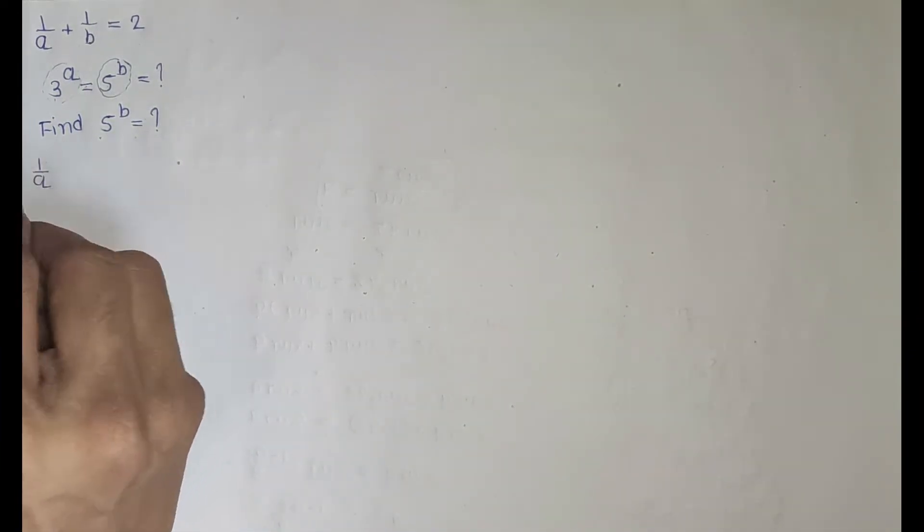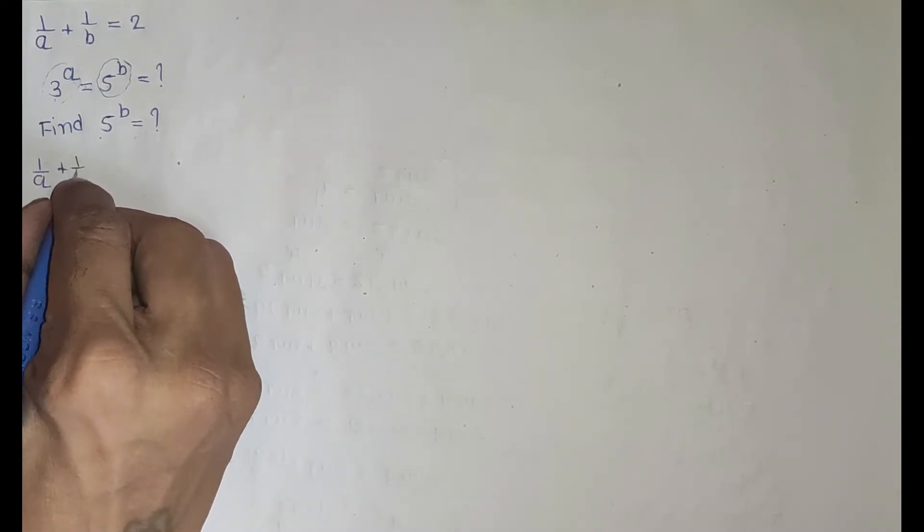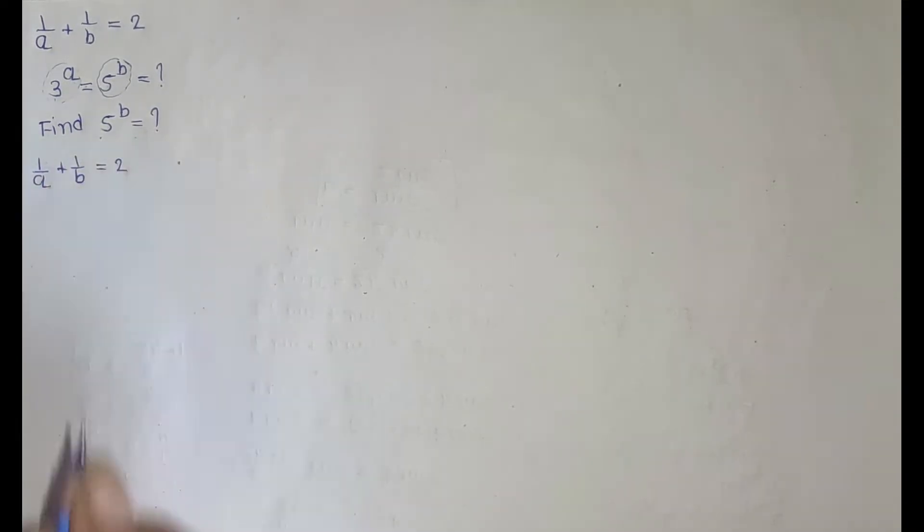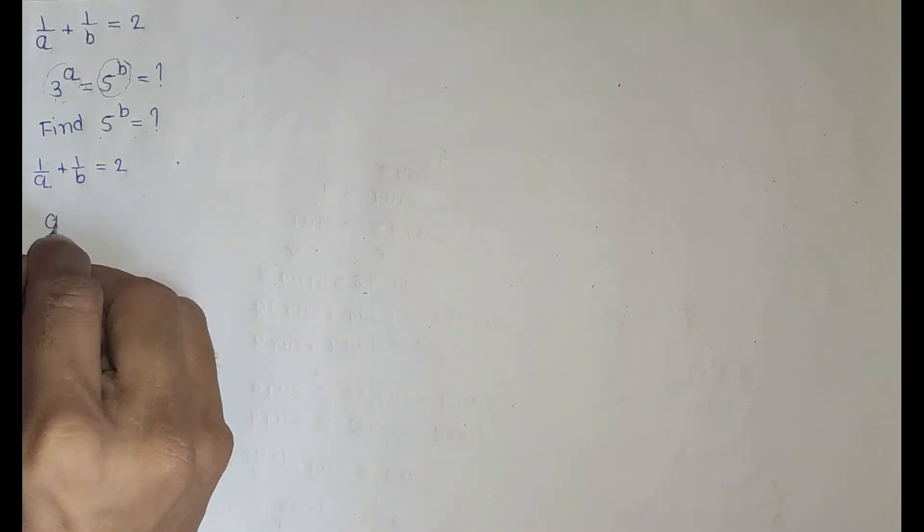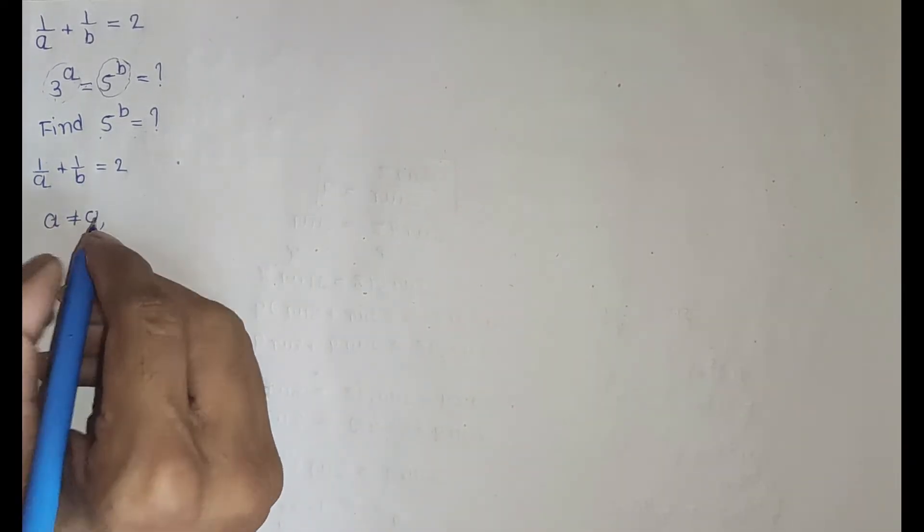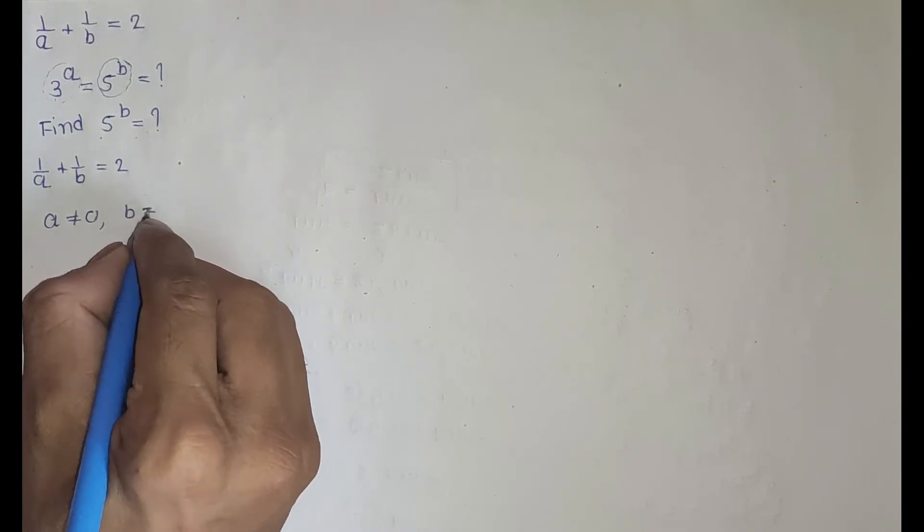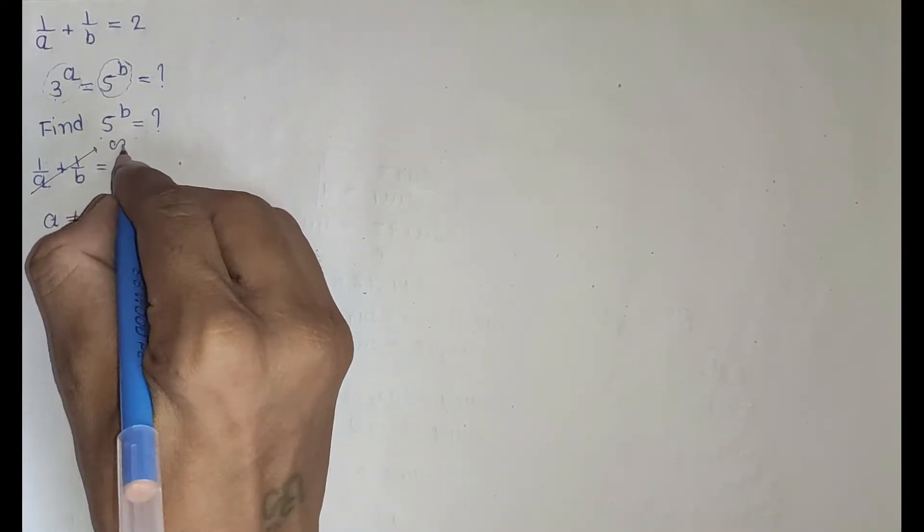Here given is 1 upon a plus 1 upon b equal to 2. Before start, let me give some observation to you. Here a is not equal to 0 and also b is not equal to 0. If a or b will be 0, this becomes infinity.